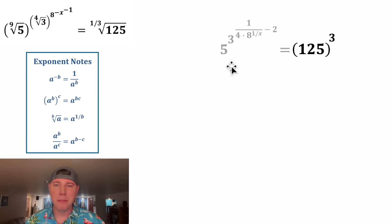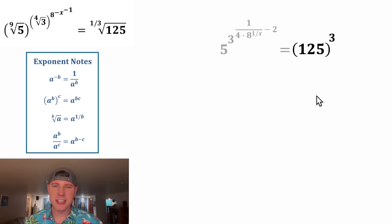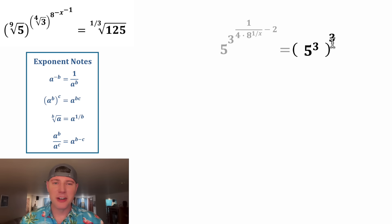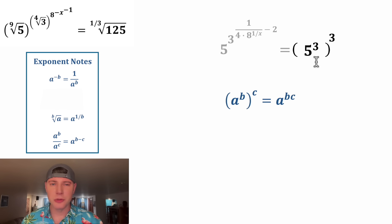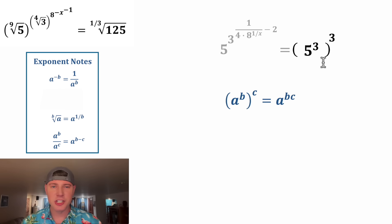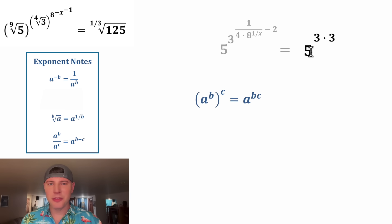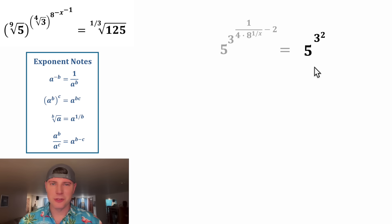Now for the 125, we have a base of five over here, so we should also try to get a base of five on this side. 125 is equal to five cubed, because five times five times five is 125. Then we have another situation of a base to an exponent, whole thing to an exponent — we end up multiplying the exponents. So this changes into five to the power of three times three, and three times three equals three squared.